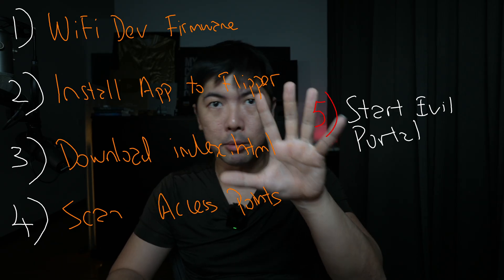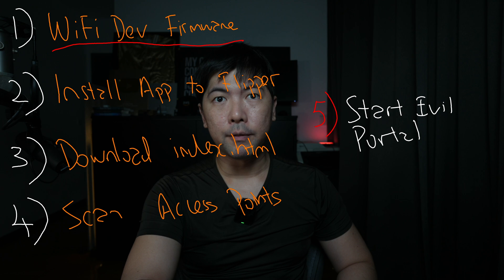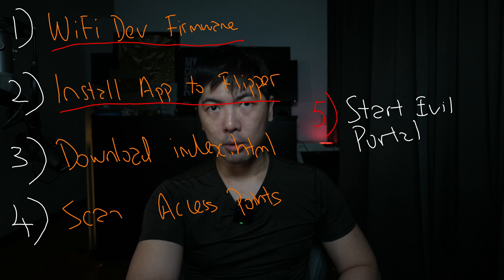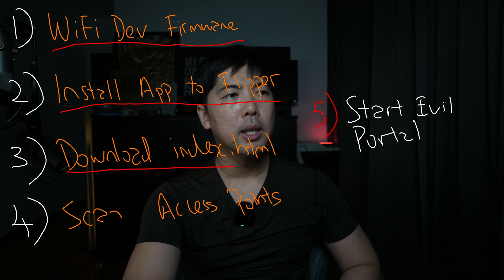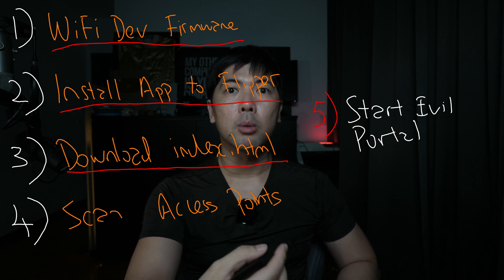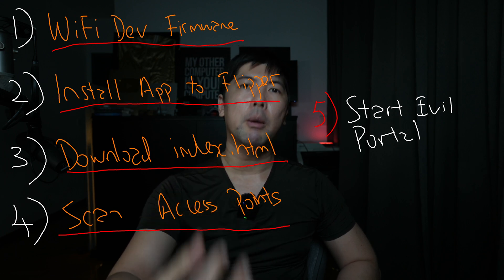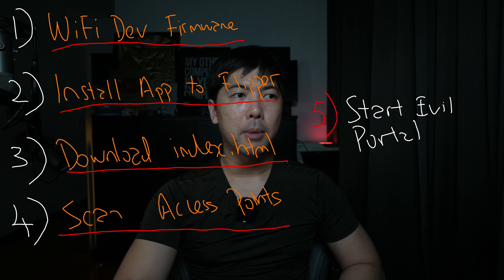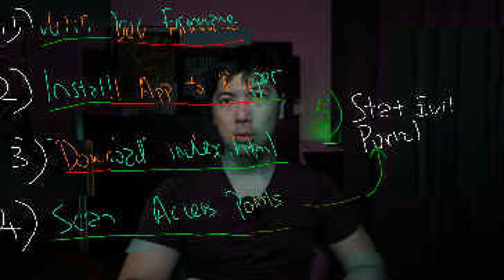In this tutorial we'll go through five steps. Number one: plug in the Wi-Fi dev board and update the firmware. Number two: install the Evil Portal app to your Flipper Zero. Number three: download a login page — there are lots of choices, including Facebook. Number four: scan access points in the vicinity so we can copy one and set up a fake Wi-Fi network that pops up to collect credentials through the Evil Portal.